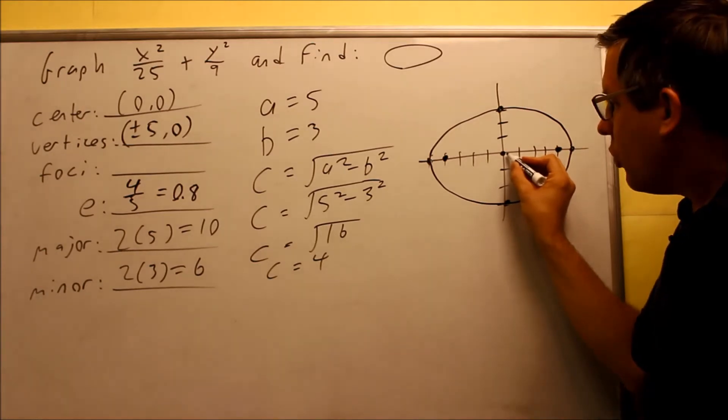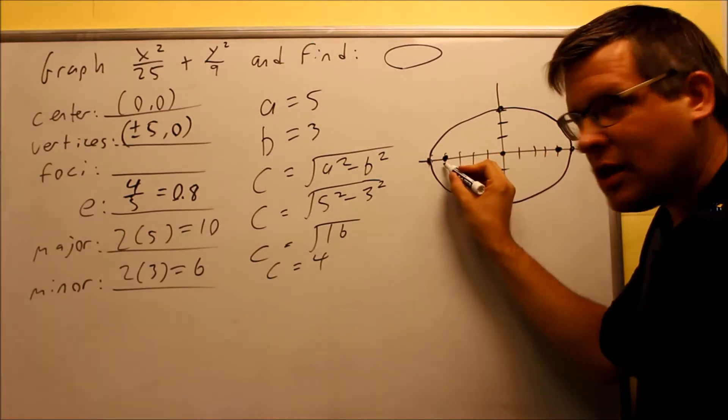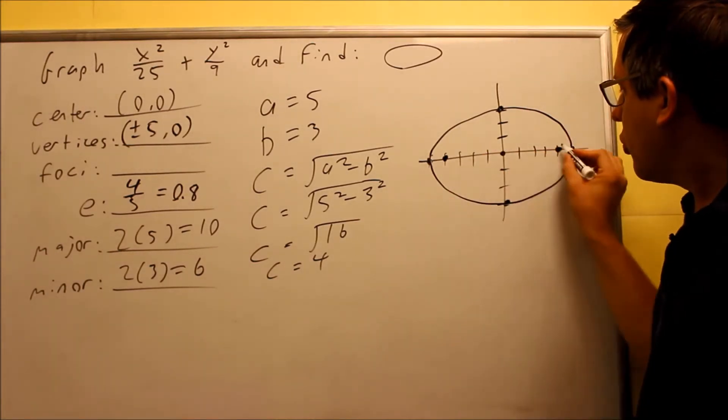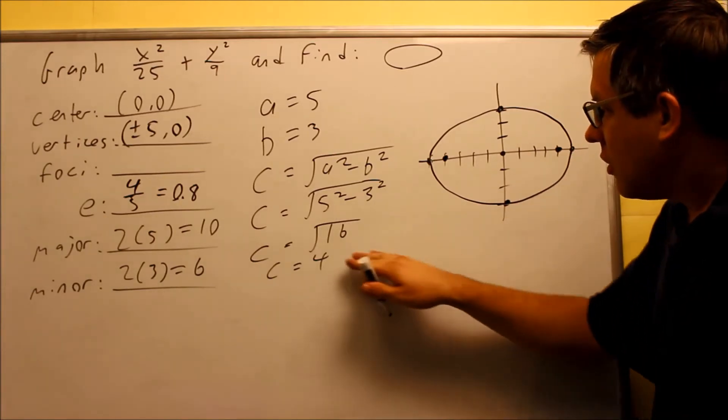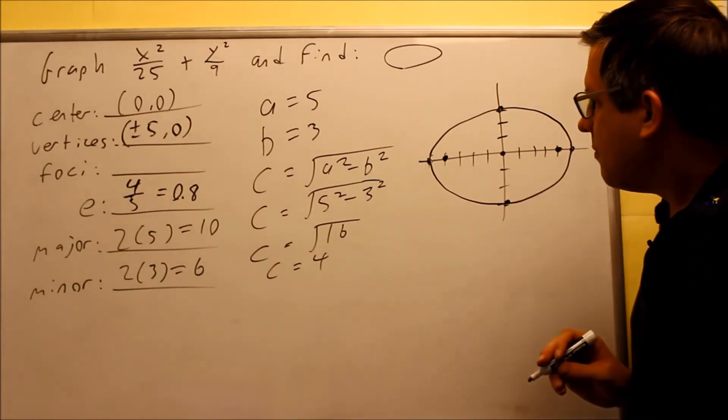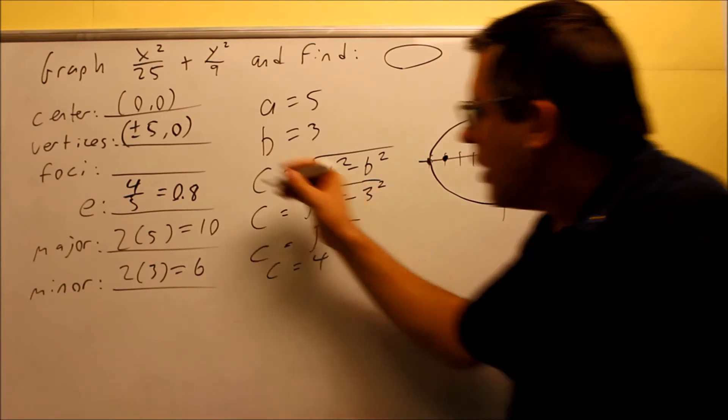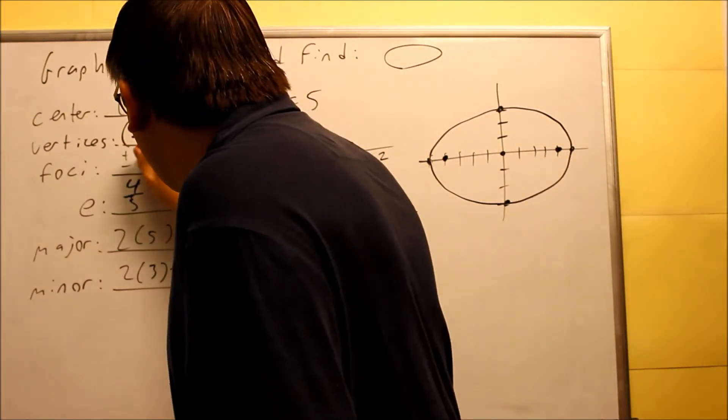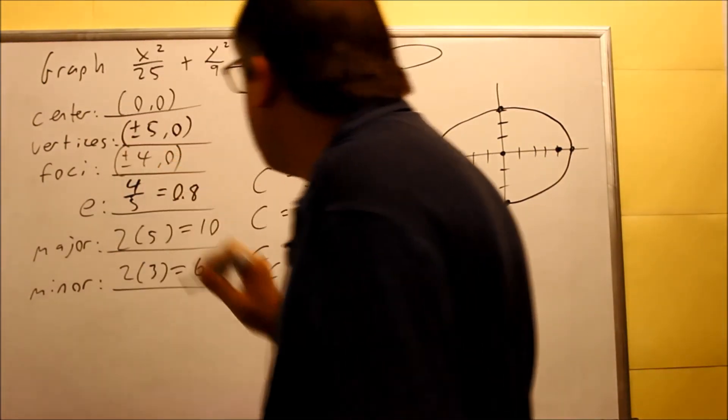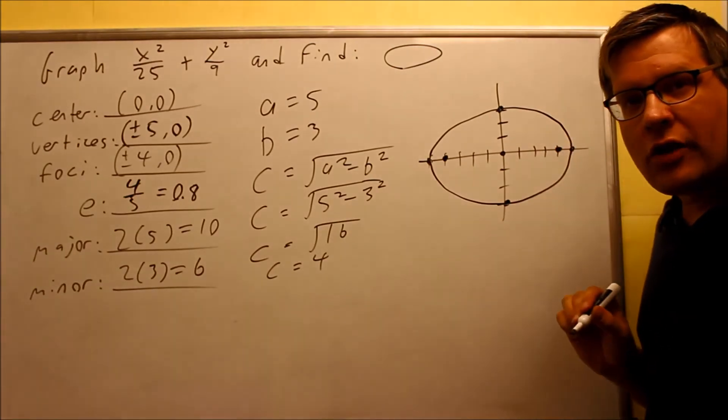So we're going to, from the center, we go to the left our amount of c, c value is 4. We go to the right c, and that gives you the other foci. So now we're going to indicate the points on that. That's going to be plus or minus 4 comma 0. We just read that directly off the picture.